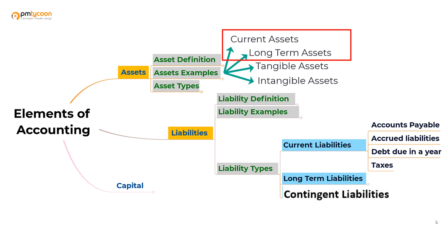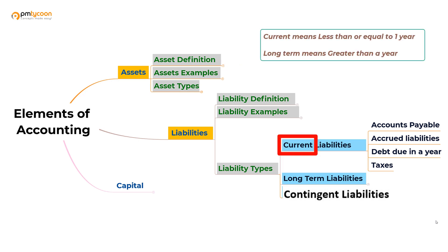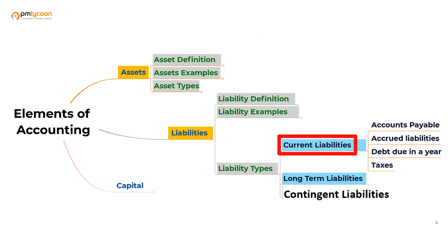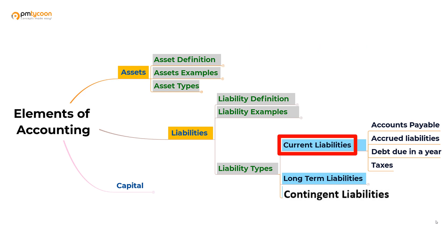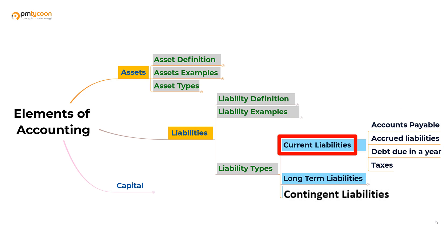Just like we have current assets and long-term assets, we also have current liabilities and long-term liabilities. The word 'current' in the business world means within a fiscal year. So when we say current liabilities, it means we are obliged to pay within the current fiscal year. Examples of current liabilities include accounts payable, accrued liabilities, debt that needs to be paid within a year, and taxes that need to be paid within a year.